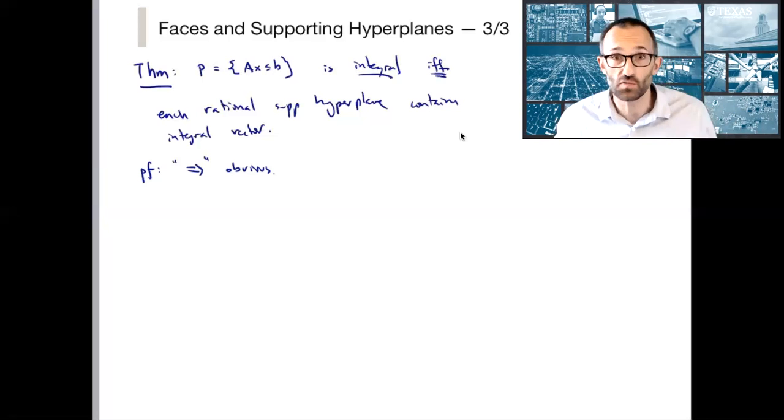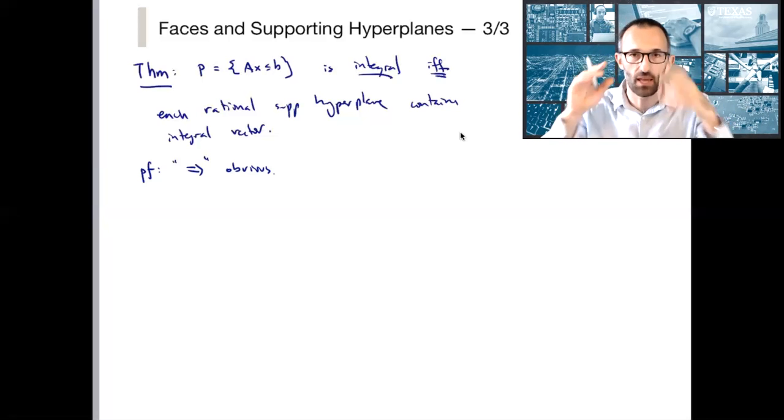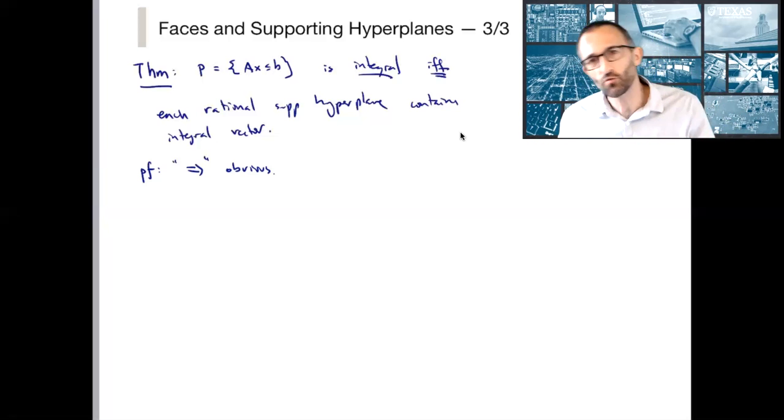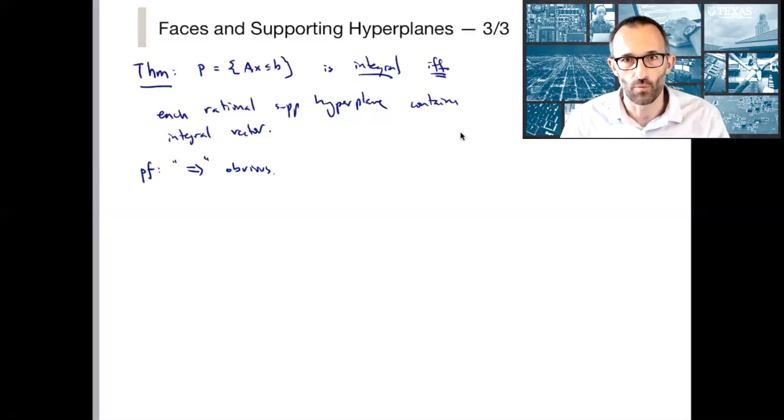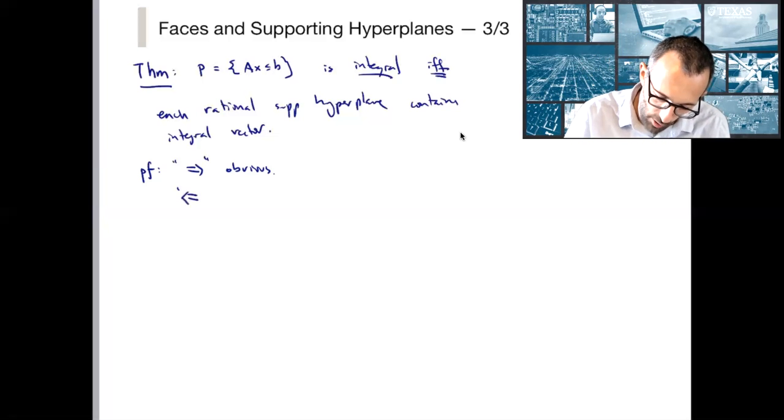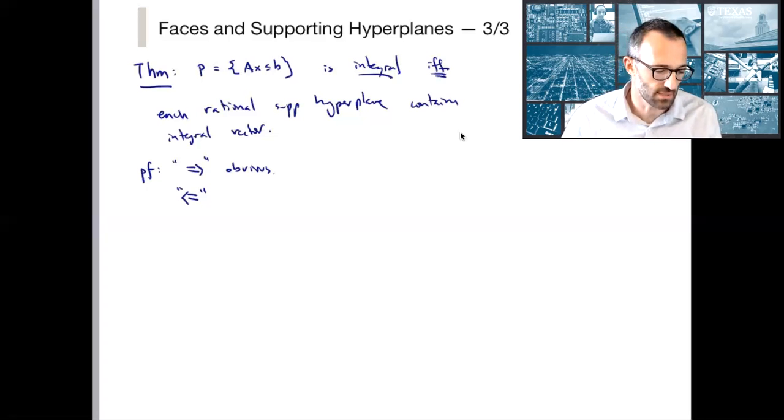So again, this theorem, if it's useful at all, of course we'll see that it is, but if it's useful at all, what's useful about it is the reverse inclusion. It's saying that we want to prove a harder property. We want to prove that every extreme point is integral. Now, let's just show that every supporting hyperplane contains somewhere, maybe not in p, a rational vector. So let's again, partly to prove the theorem and partly just to give us exercise with these things, let's prove the reverse.